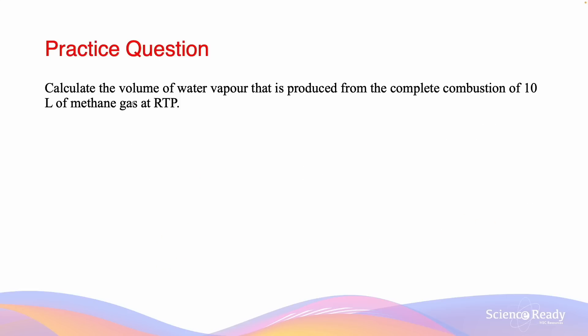This next question reads, calculate the volume of water vapor that is produced from the complete combustion of 10 liters of methane gas at RTP. So we first have to write out what the equation is for the complete combustion of methane gas. Methane gas has the formula CH4 and is in the gas phase. Complete combustion involves reaction with oxygen gas in order to produce carbon dioxide gas and also water vapor, and we will now balance our equation. So what we observe is that the volume of water vapor that would be produced by combustion of methane gas is going to have a molar ratio of 1 to 2.